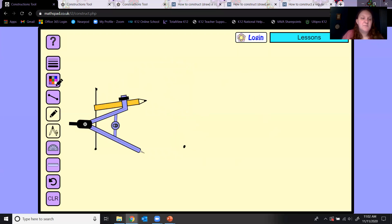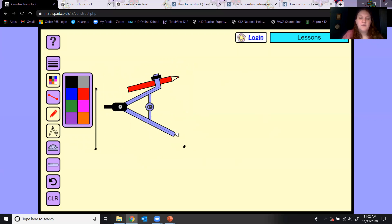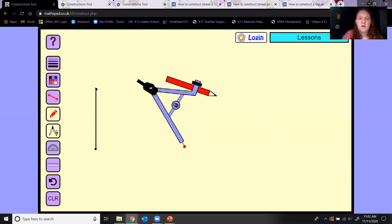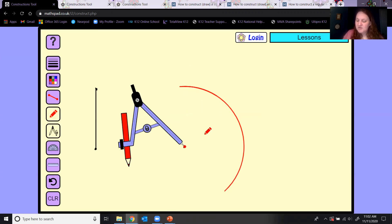Then you're going to take your compass and open it up the length of the side that you gave yourself. I would lock it. Come over to the point you gave yourself and you can make two small arcs or one big arc. I like doing the one big arc. Then pick a point on that arc, any point you want on there.